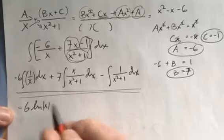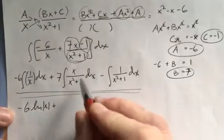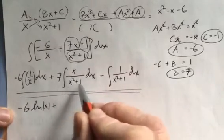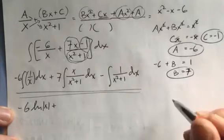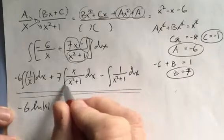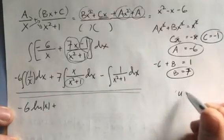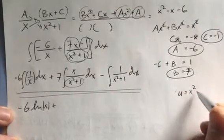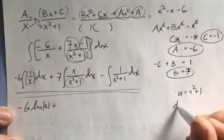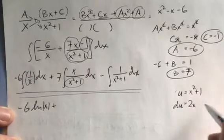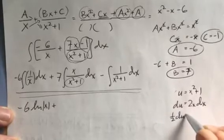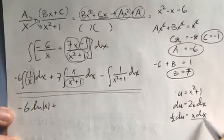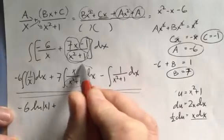is quite straightforward as a u-substitution. I'll do that over here in the sidebar. I'm going to let my u be the denominator: u = x² + 1. Then du = 2x dx, so ½du = x dx. That's the beauty of the substitution—I've got